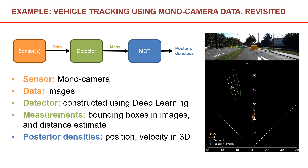The output from the MOT algorithm is posterior densities for the object states. In this example, the object states are position and velocity in three dimensions. On the right, we have visualized the X and Y dimensions from a top-down, or bird's-eye, view. The plus signs illustrate the object's position, and the ellipses illustrate the covariance matrices, or the uncertainties of the object estimates.